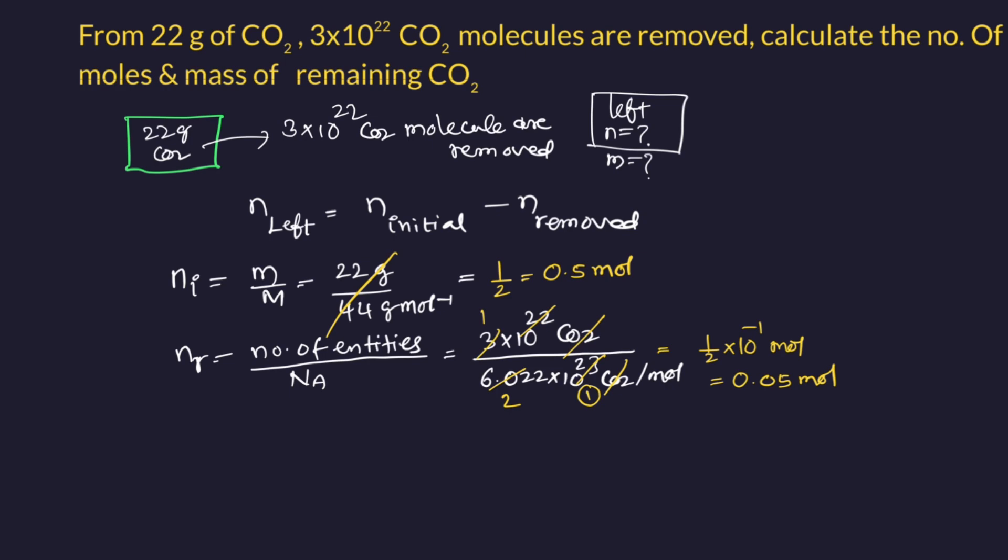How to calculate now? Number of moles left or remaining equals number of moles initial minus number of moles removed. We have initial 0.5 mole minus 0.05 mole. After subtraction, you will get 0.45 mole. This is the left mole. One answer is complete.